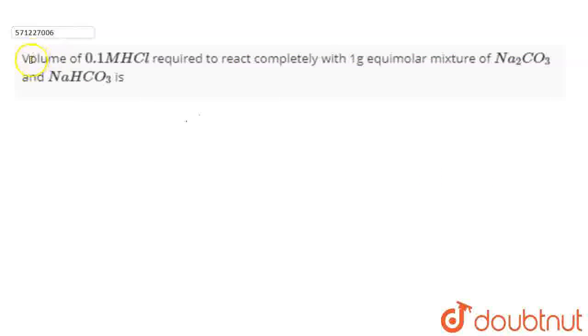Hello everyone, the question is: Volume of 0.1M HCl required to react completely with 1 gram equimolar mixture of Na2CO3 and NaHCO3 is? In this question, we have to find the volume of 0.1M HCl that is required to react completely with 1 gram of equimolar mixture of Na2CO3 and NaHCO3.